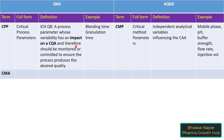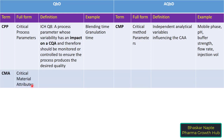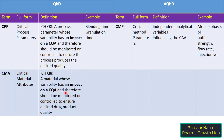The next term in QBD is CMA, Critical Material Attributes. The definition: a material whose variability has an impact on a CQA and therefore should be monitored or controlled to ensure the desired drug product quality. Examples include particle size, which can influence dissolution; moisture content, which can influence related substances and dissolution; and purity, which is essential to achieve products with the desired quality.